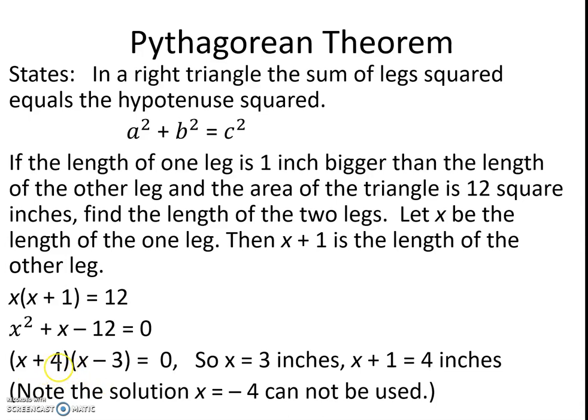So x plus 4, the solution would be a negative 4, and of course that doesn't work in length. We can't have negative length. X minus 3, though, the solution is 3. So x equals 3, and x plus 1 is 4. So the leg lengths are 3 inches and 4 inches.